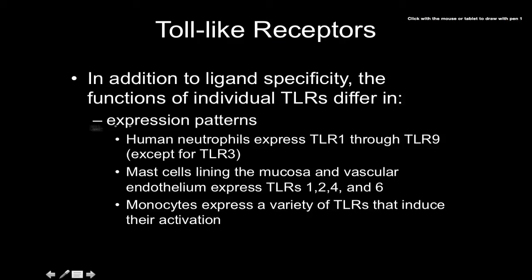In addition to ligand specificity, the functions of individual TLRs differ in the types of cells that express them. Neutrophils express TLR1 through 9, but not TLR3 — and that makes sense because TLR3 is designed for detecting viruses, and neutrophils don't play a major role in dealing with viruses. Mast cells express TLR1, 2, 4, and 6. Monocytes express a large variety of them because monocytes differentiate into macrophages.